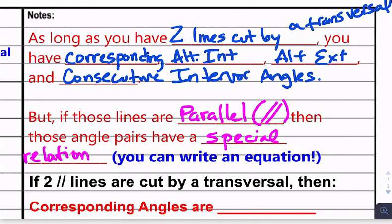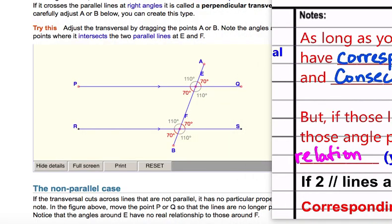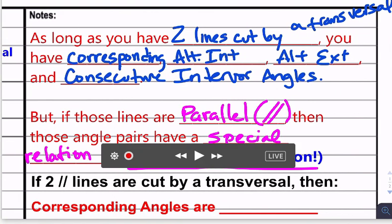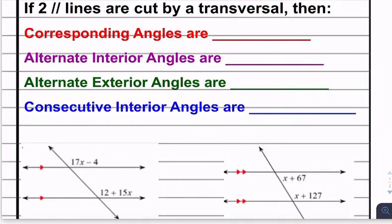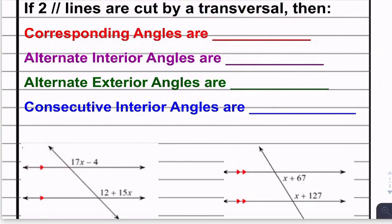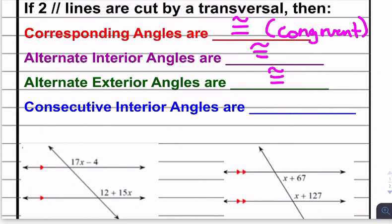In other words, you can create an algebraic equation from them. If those lines are parallel — remember the marking for that is two slashes — then those angle pairs have a special relationship. The angles that we could just say are corresponding before are now congruent. The angles that are consecutive interior are now supplementary, and so on. If two parallel lines are cut by a transversal: corresponding angles are congruent, alternate interior angles are congruent, alternate exterior angles are congruent, and consecutive interior angles are supplementary, which means they add to 180 degrees.